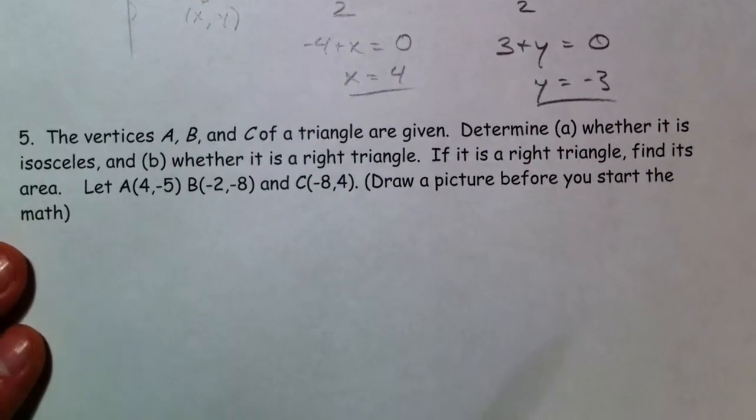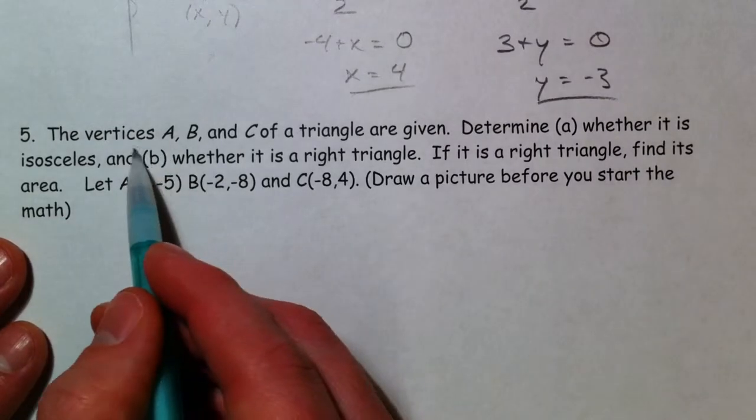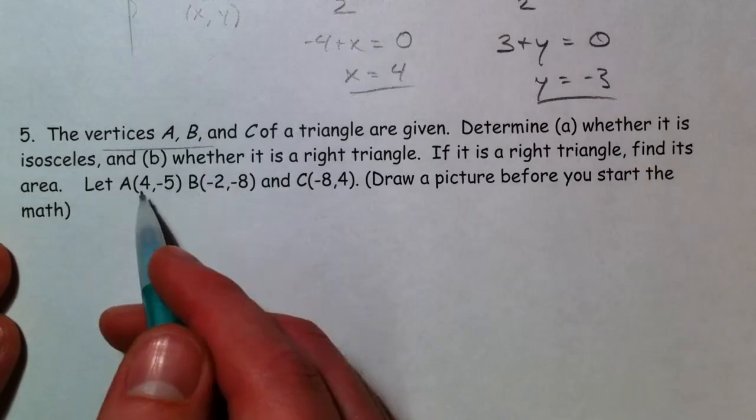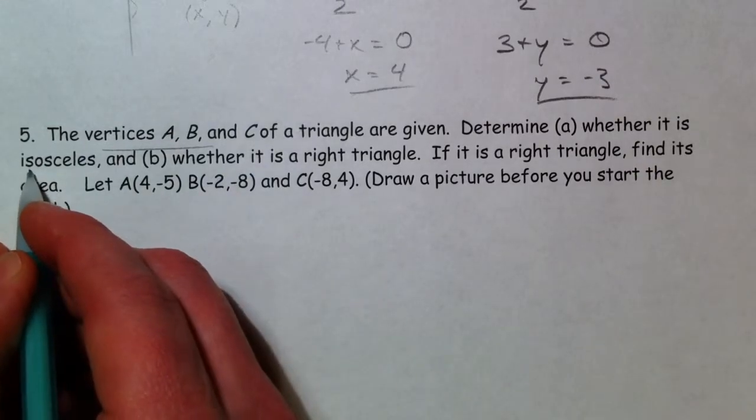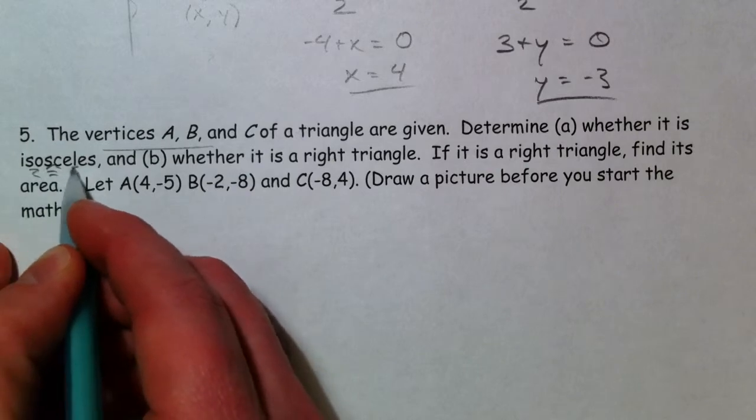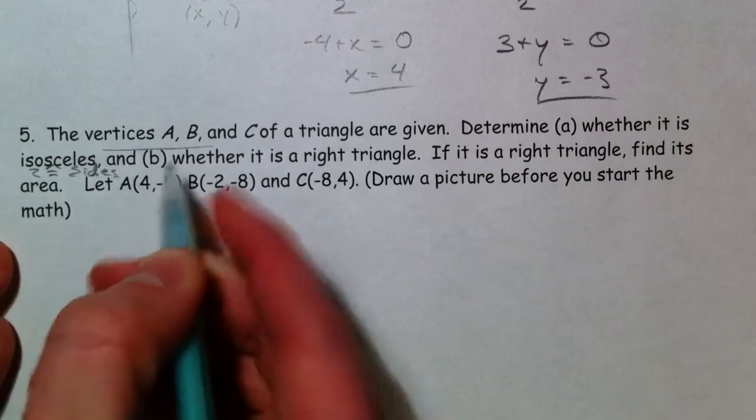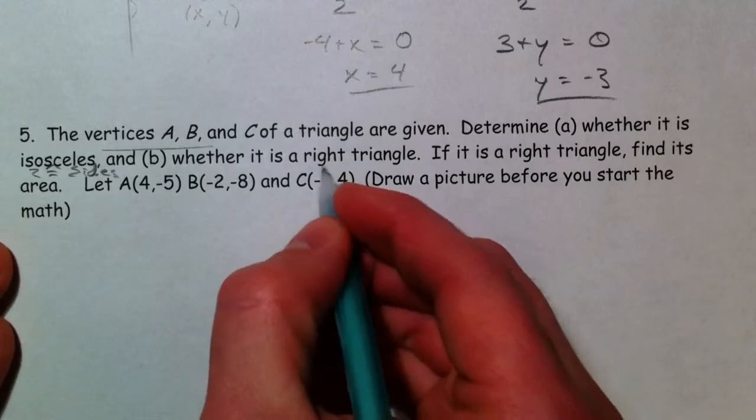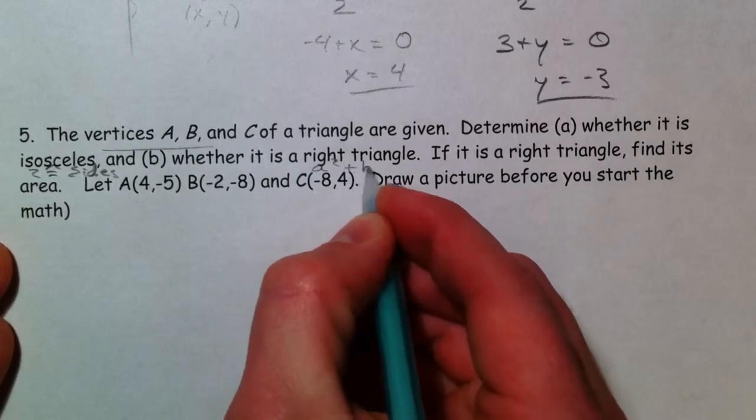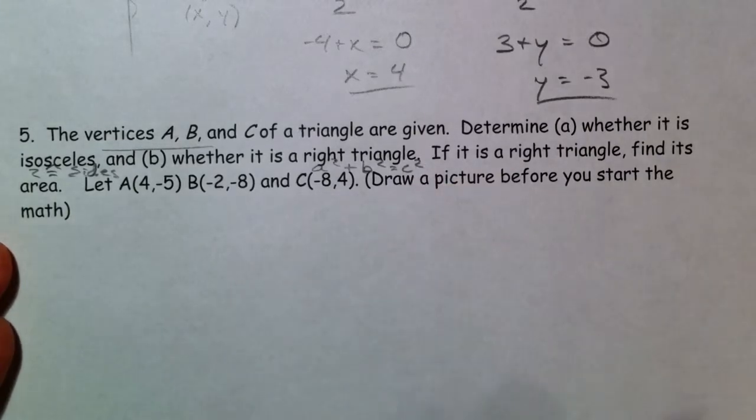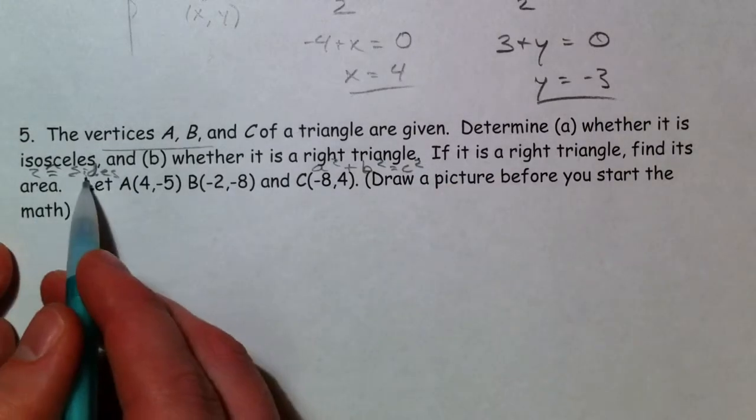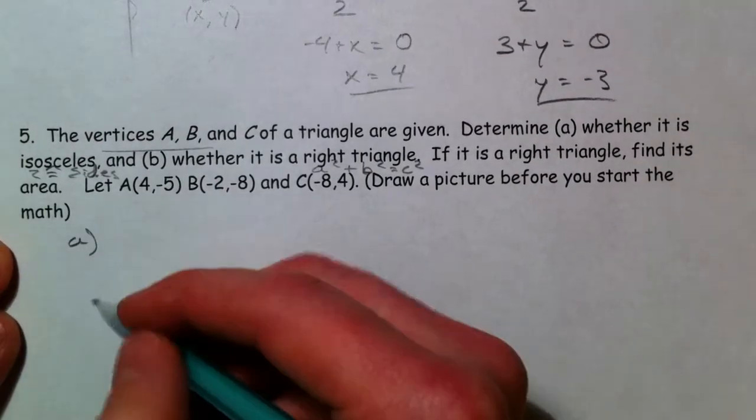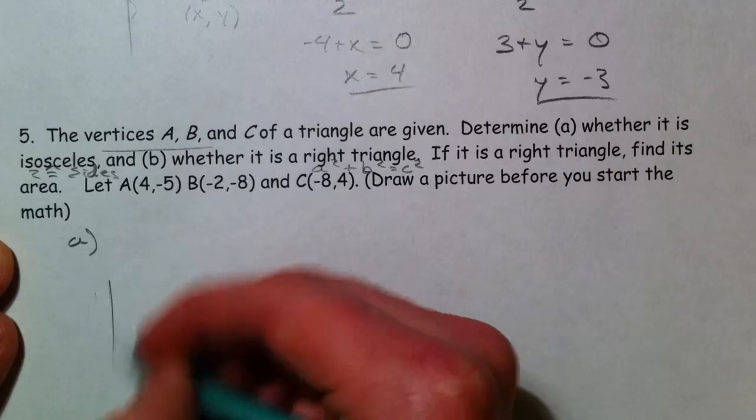Last example here. It's going to involve everything we have. Vertices A, B, C of a triangle. Decide whether it's isosceles, meaning two sides are the same, two congruent sides, and whether it's a right triangle, meaning it'll obey Pythagorean theorem, A squared plus B squared equals C squared. So I'm going to draw a picture to get started.